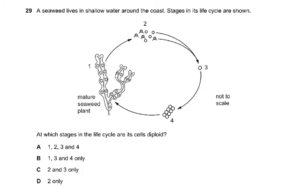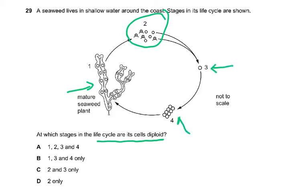Question number 29: a seaweed lives in shallow water; stages in its life cycle are shown. The mature seaweed plant has the diploid number. The question asks at which stages in the life cycle are cells diploid. The gametes are haploid — there is a female and a male gamete — and they fuse to form the zygote, which is diploid. That cell then divides into many diploid cells. The answer is 1, 3 and 4.